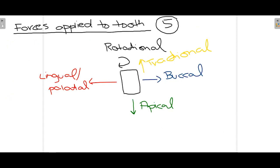There are five main forces used in extraction. Buccal force is directed toward the cheek or lips. Lingual force for mandibular teeth or palatal force for maxillary teeth is the opposite direction. Rotational force involves rotating the tooth within the forceps. Apical force is applied downward to move the center of rotation apically, reducing fracture risk. Finally, traction force is the slight upward force used to lift the tooth from its socket.